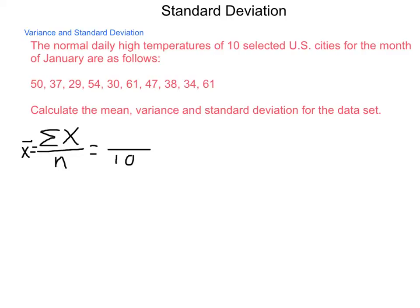So, we're going to add all these numbers together and divide by 10. When we add the numbers together, we get a total of 441. Divided by 10 gives us an average temperature, these are in degrees Fahrenheit, of 44 and one-tenth degree.